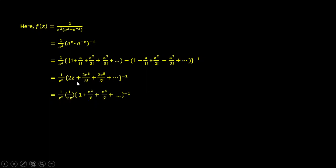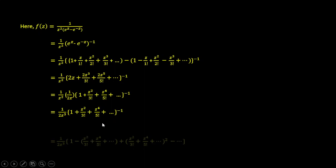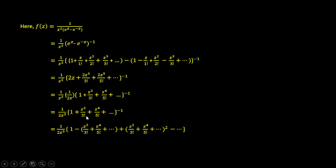From this, we can take 2z as common. So we get 1/z² times 2z times the series: 1 plus z²/3! plus z⁴/5! plus dot dot dot. This simplifies to 1/(2z) times the series inside brackets: 1 plus z²/3! plus z⁴/5! plus dot dot dot.